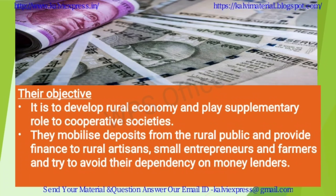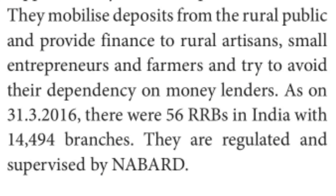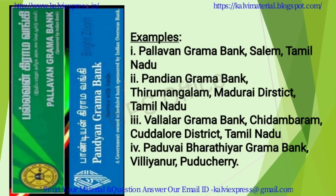RRBs operate by accepting deposits from the rural public and providing loans to rural artisans and small-scale traders so they do not depend on third-party money lenders. As of 31-3-2016, there were 56 RRBs in India with 14,494 branches. These banks are regulated and supervised by NABARD.